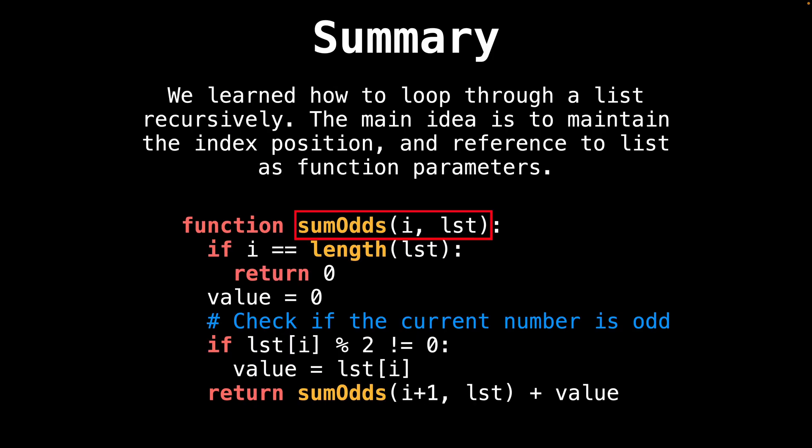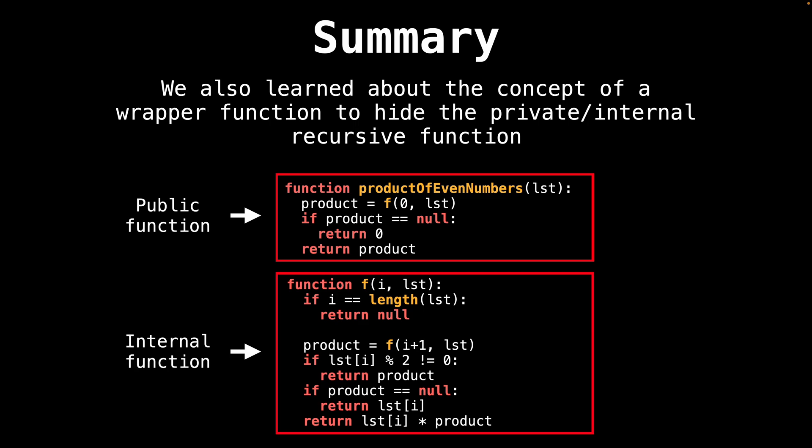In summary, we learned how to loop through a list recursively. The main idea is to maintain an index position as well as a reference to the list in the function arguments as we do our recursive calls. We also learned about the concept of a wrapper function to hide internal recursive function details — separating recursive functions this way as a layer of abstraction provides an easy way to specify default values to kickstart the recursion and can make handling edge cases easier. Thanks so much for watching — please like this video and subscribe for more content, and I'll catch you in the next one.